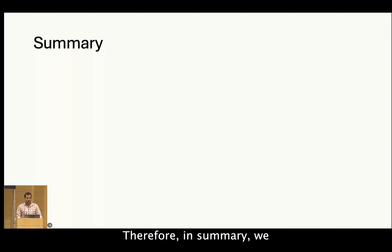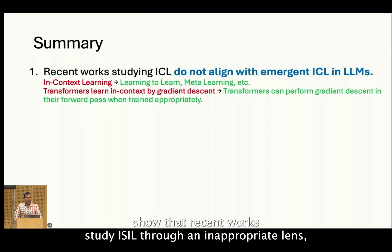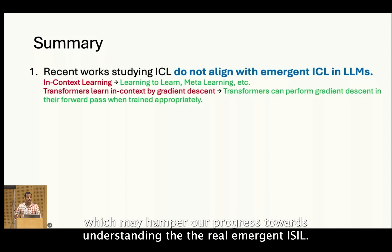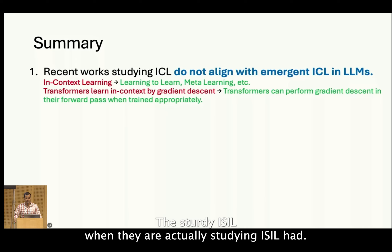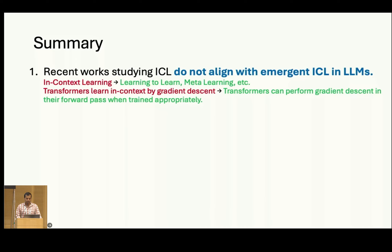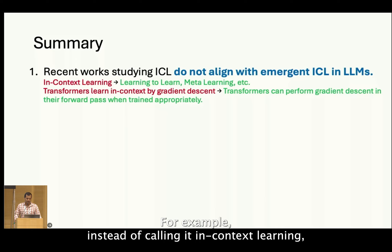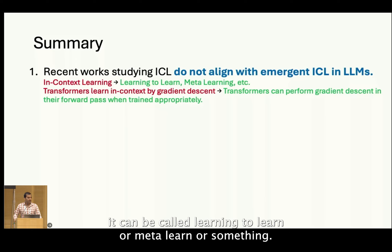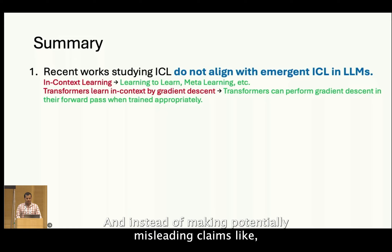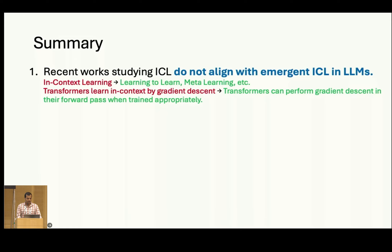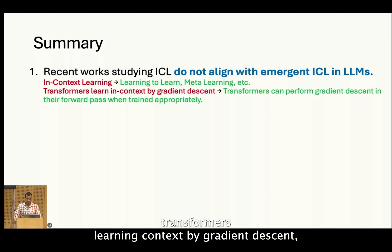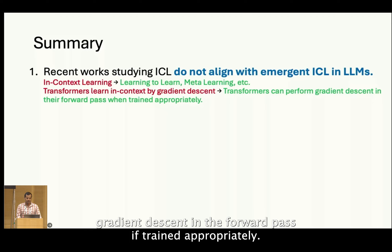Therefore, in summary, we show that recent works study ICL through an inappropriate lens, which may hamper our progress towards understanding the real emergent ICL. We see lots of papers following this problematic setup to study ICL when they are actually studying ICL-hat. We ask the community to refrain from using established terminology for new phenomena. For example, instead of calling it in-context learning, it can be called learning-to-learn or meta-learn. And instead of making potentially misleading claims like 'transformers learn in-context by gradient descent,' an accurate statement could be 'transformers can perform gradient descent in their forward pass if trained appropriately.'